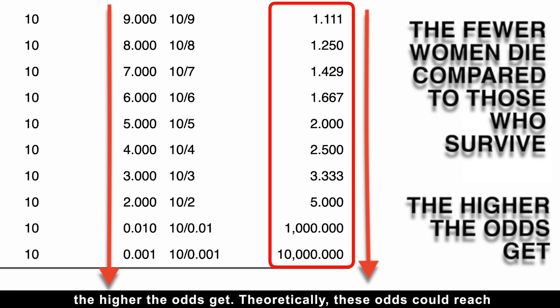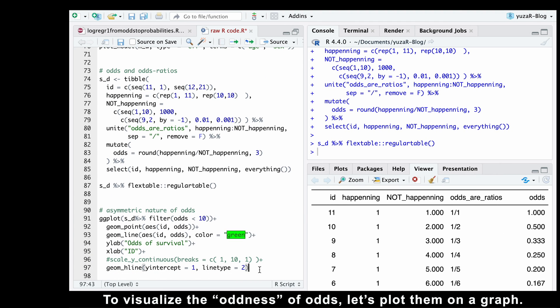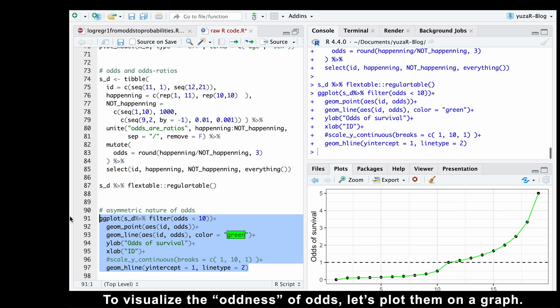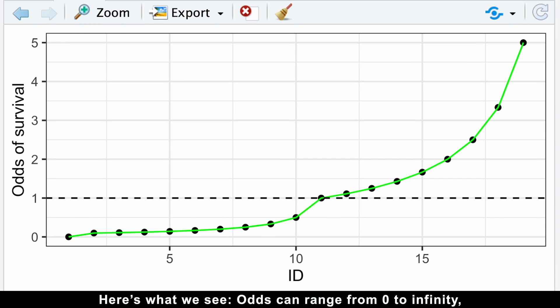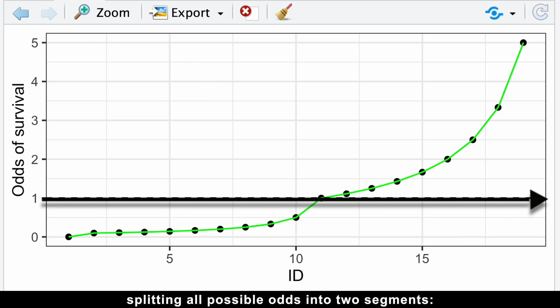And the fewer women die compared to those who survive, the higher the odds get. Theoretically, these odds could reach incredibly high numbers like 5, 100, 10,000, or even infinity. To visualize the oddness of odds, let's plot them on the graph. Here is what we see: odds can range from zero to infinity, with one sitting right in the middle.